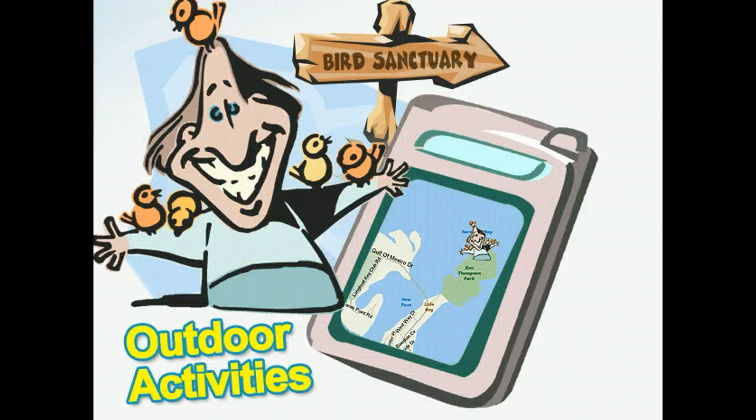Another outdoor activity is to supply students with a list of coordinates. Have the students follow those coordinates to a location where another activity can be performed, such as examining vegetation, rock formations, or animal habitats, or whatever lesson you can think of that would be better addressed in an outdoor location.